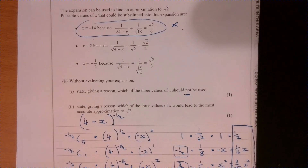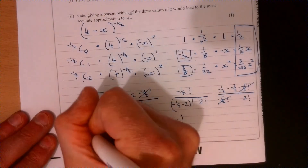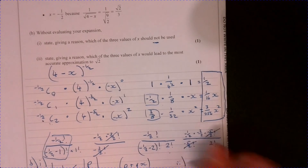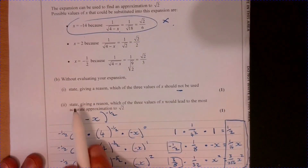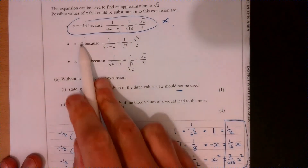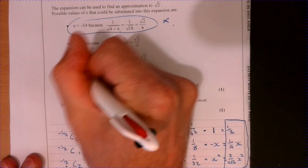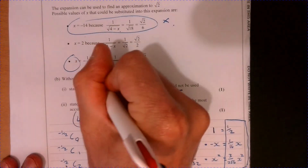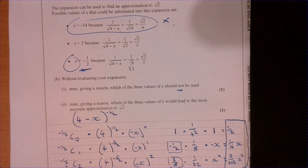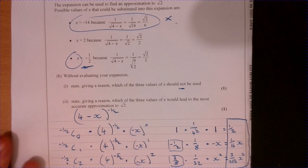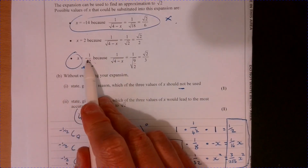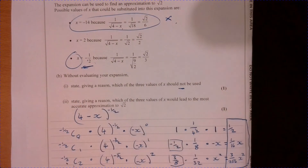And then part two: which of the remaining two values is going to give the best answer? They both seem to be valid. Well, this one's going to be the best one because it's closest to zero — in other words, furthest away from the cutoff point for validity. So if you say it's because it's closest to zero, that'll be fine and give you all the marks.